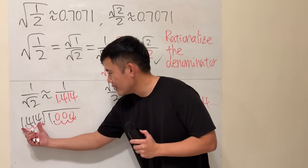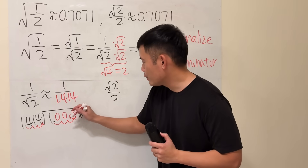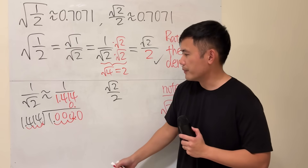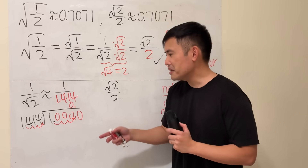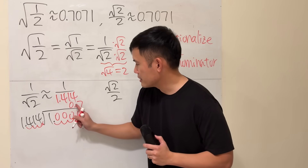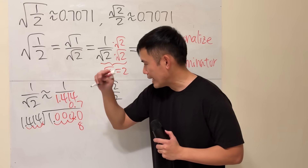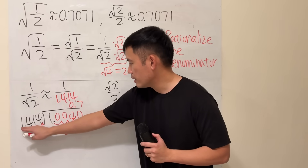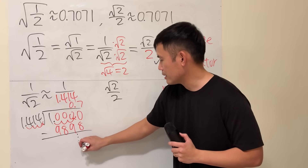You ask yourself: does 1,414 go into 1,000? No, technically zero times. So you will have to start with a zero, then line out the decimal point here. Once you put this down, you can put another zero and continue. How many times does this go into 10,000? I will tell you seven times. Seven times four is 28, so we have eight; remember the two. Seven times one is seven, add the two, we have nine. Continue: seven times four is 28 — that's a two — and then seven times one is seven, so it's nine. And then you subtract. So many numbers; it's so hard.